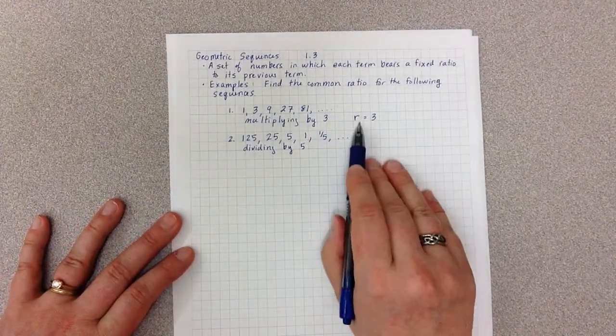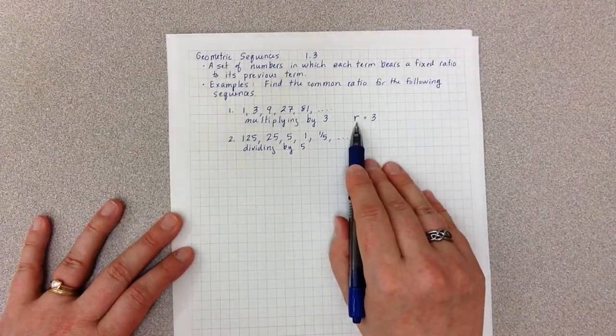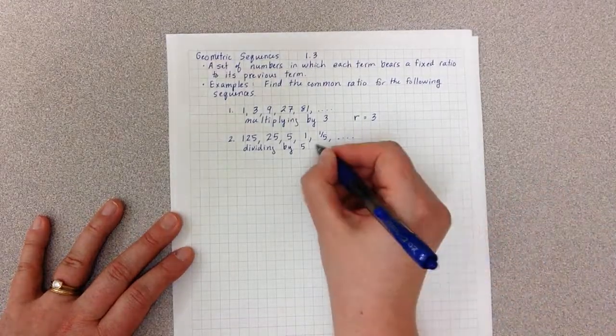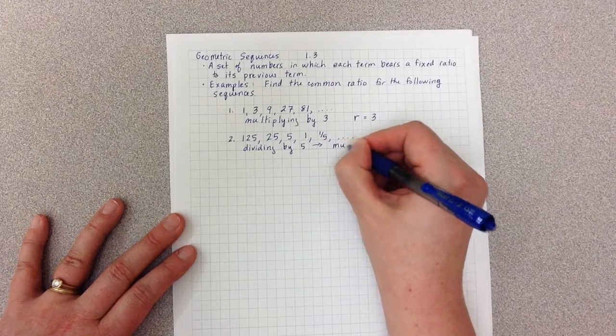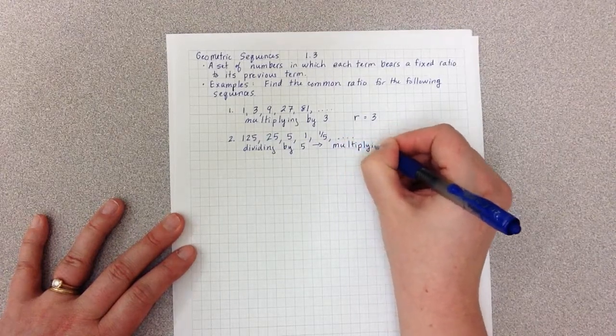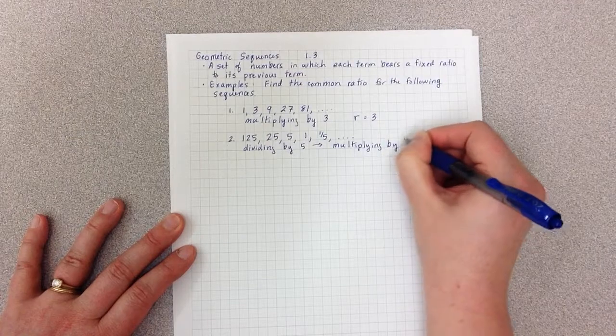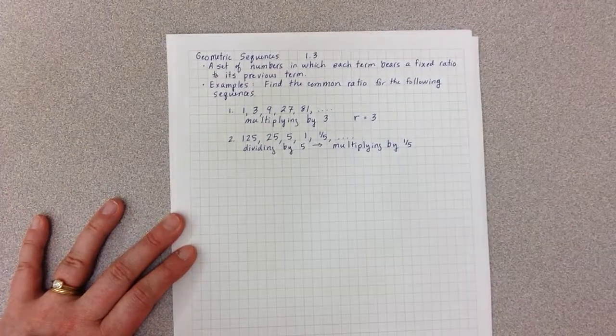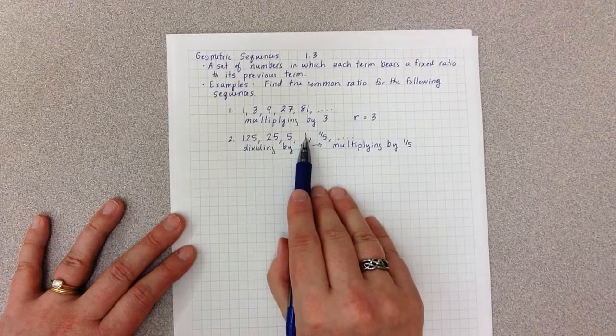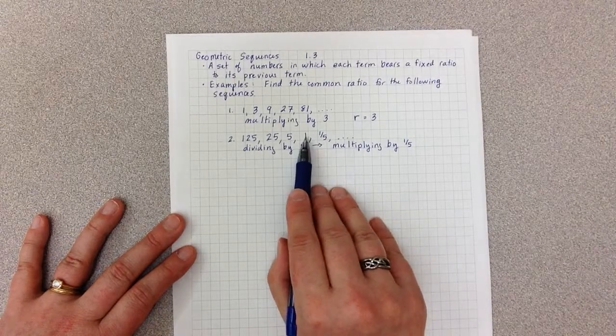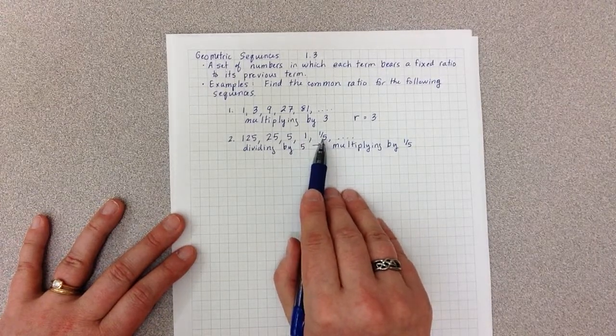However, our common ratio R must be a multiplication. So remember that dividing by 5 is the same thing as multiplying by 1 over 5. And you can really clearly see that right here where to go from 1 to 1/5, 1 times 1/5 is 1/5.